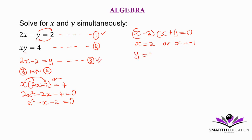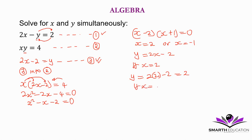y is equal to 2x minus 2. So if x is equal to 2, it means y is equal to 2 times 2 minus 2, which is equal to 2. And then if x is equal to negative 1, then y is equal to 2 times negative 1 minus 2, which is equal to negative 4.